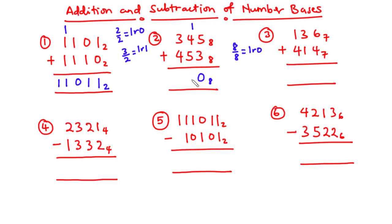10 divided by 8 is 1 remainder 2, so we write 2 and carry 1. Then 1 plus 3 is 4, and 4 plus 4 is 8 — we write remainder 0 and carry 1. Finally, 1 plus 0 plus 0 is 1. So the answer is 1020 base 8.